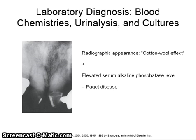Laboratory diagnosis includes blood chemistries, urinalysis, and cultures. In this image, it shows the radiographic appearance known as the cotton wool effect, and the patient also had an elevated serum alkaline phosphate level. Therefore, they came up with the diagnosis of Paget's disease of bone.